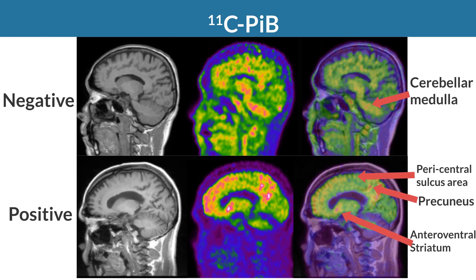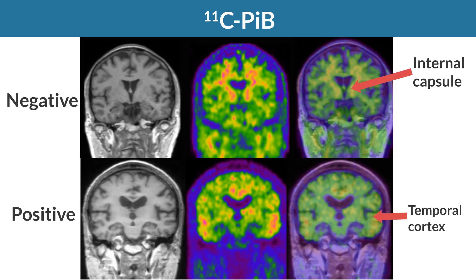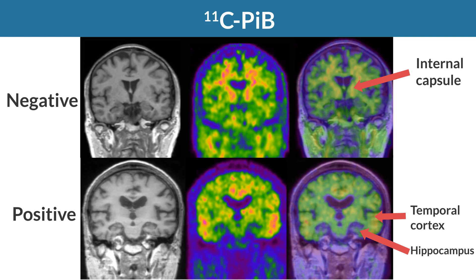Anteroventral striatum shows high accumulation in a positive case. In the coronal section, the hippocampus shows low accumulation in a positive case.